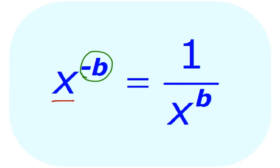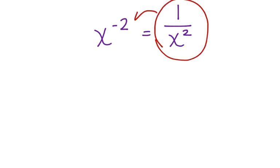So, let's go back again. We just had x to the negative 2, and we can write that as 1 over x squared. This is the simplified form of this expression.